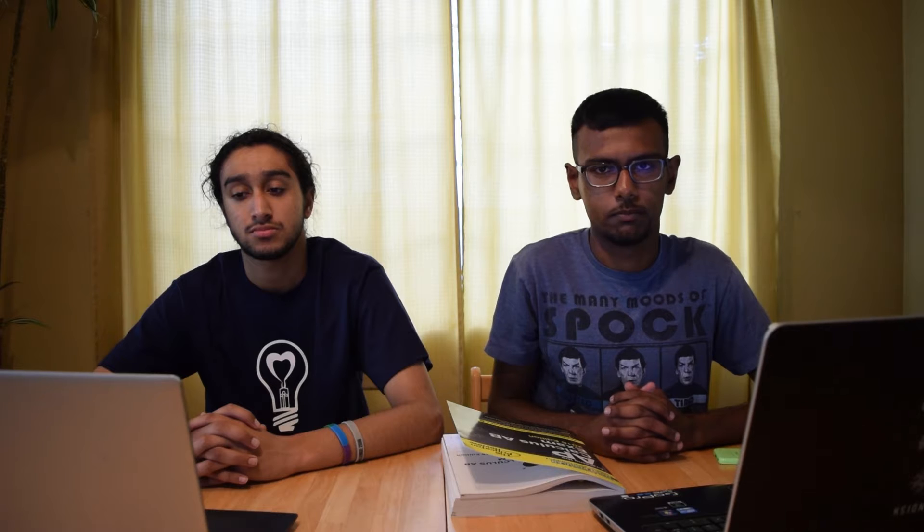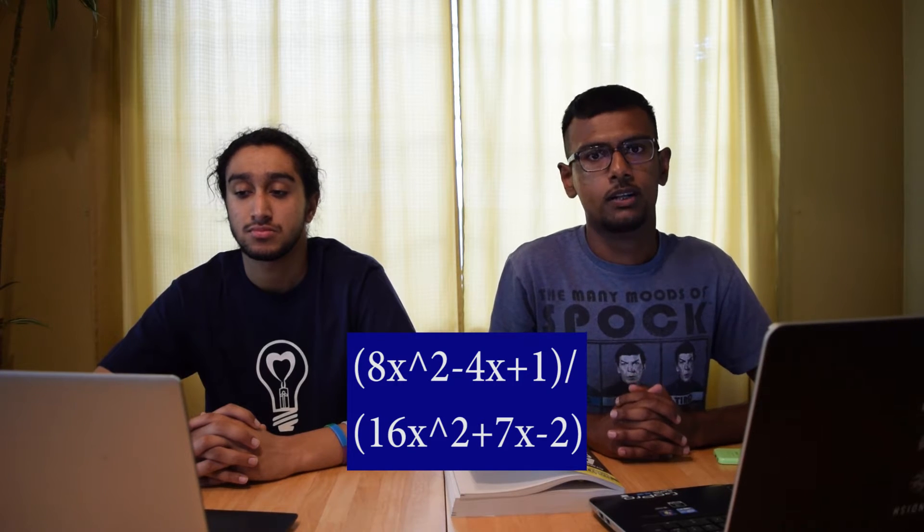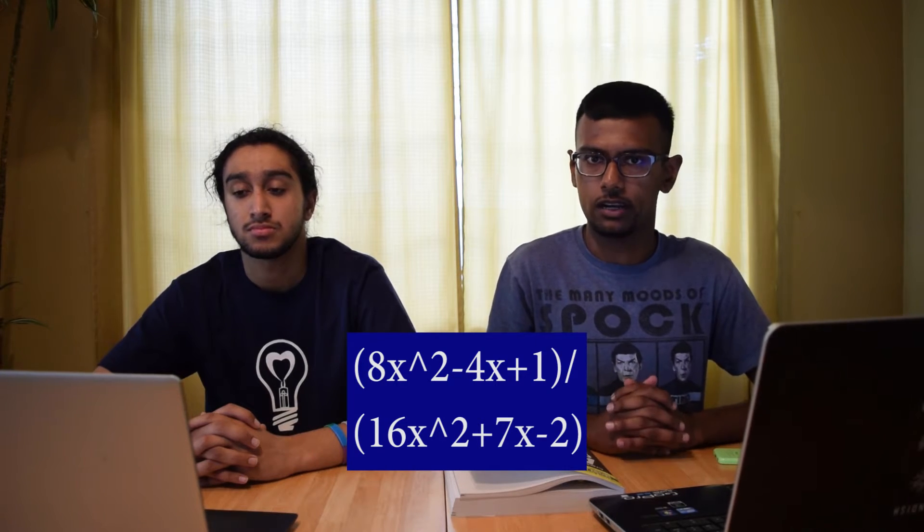Now, in this example, since both powers are the same, the limit would be 8 over 16, or 1/2. Remember, if the highest power of x in your rational expression is in the numerator, then the limit of x as it approaches infinity is infinity. If the highest power of x in the rational expression is in the denominator, as the limit approaches infinity, it's 0.